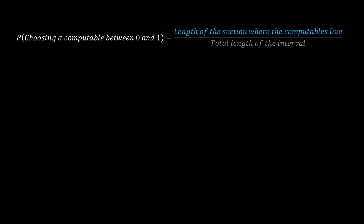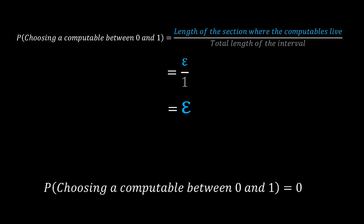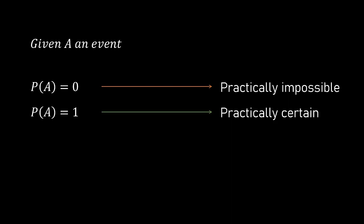And since the probability of choosing a computable between 0 and 1 is the length of my interest area over the length of the interval, this results in being epsilon. What we have just proven is that the set of computable numbers has a measure of 0, which translates in the fact that the sum of all those lengths is so so so tiny, that the theoretical probability of ever choosing a computable between 0 and 1 is practically 0. Now, remember that probability varies from 0 to 1, where 0 means that it's practically impossible to get that event, and 1 means it's practically certain. And since we know every real number is either computable or non-computable, then if the probability of choosing a computable was 0, choosing a non-computable must be 1.